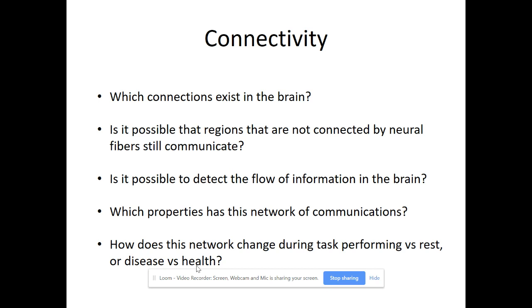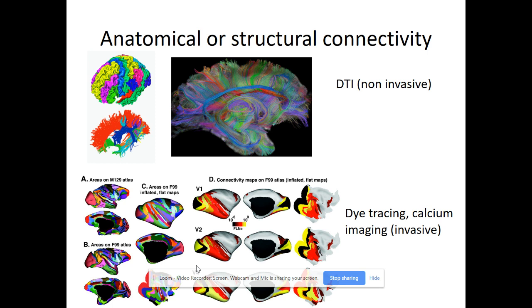Speaking of the brain, the main questions one may ask are: which connections and which kinds of connections exist in the brain? Is it possible that regions not connected by neural fibers still communicate? Is it possible to detect the flow of information in the brain? Which properties does this network communication have? And how does this network change during task performance versus stress, disease versus health? In the brain, we have connectivity at different scales and different types.